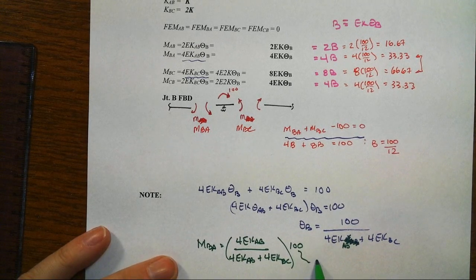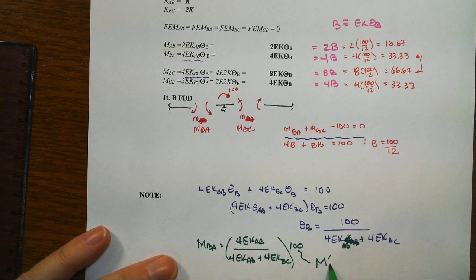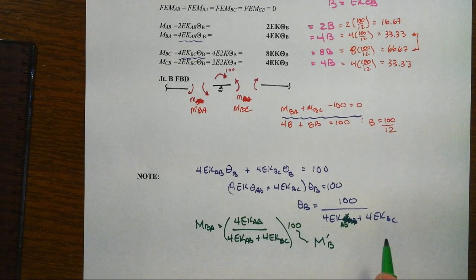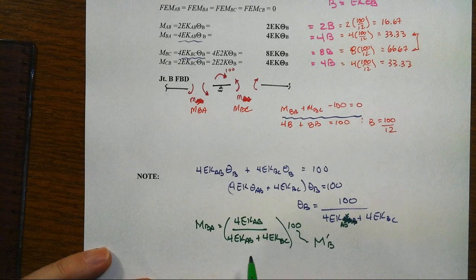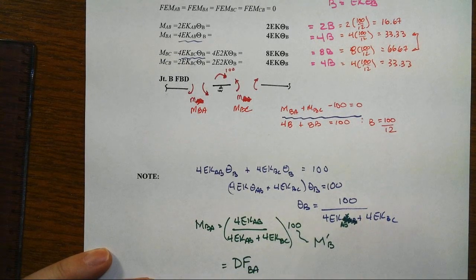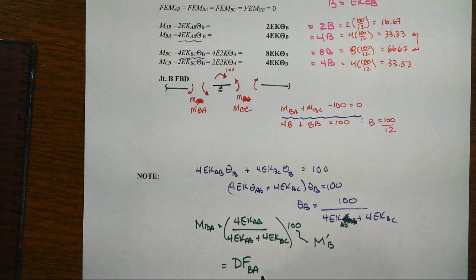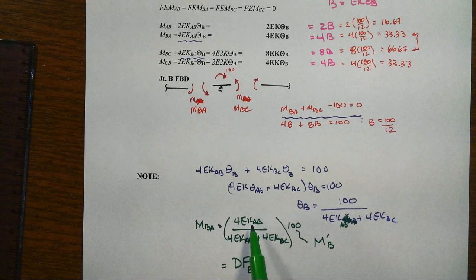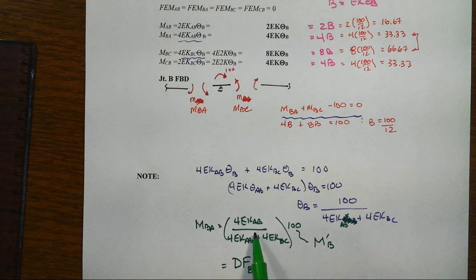That right there is our unbalanced moment at B. Well, this whole thing right here is called the distribution factor for the B end of member AB. And it's just equal to the relative stiffness of that member over all of the stiffnesses that come into that joint.